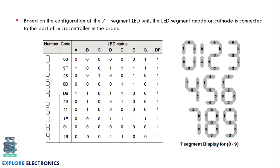In the common anode method, to display the number 0 we make A, B, C, D, E, F equal to 0 and G equal to 1. G is the middle segment. All LEDs turn on except the middle one and the decimal point, so we pass 1 from G and DP. That is the code for displaying 0. Similarly, for displaying 7 we pass a corresponding value, and for displaying 4 we pass another value. This is how the LED 7 segment display shows numbers from 0 to 9.